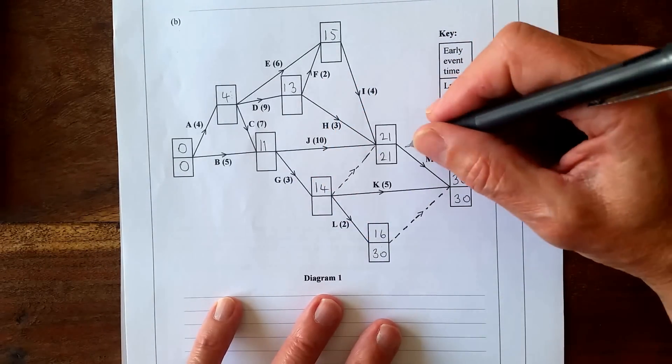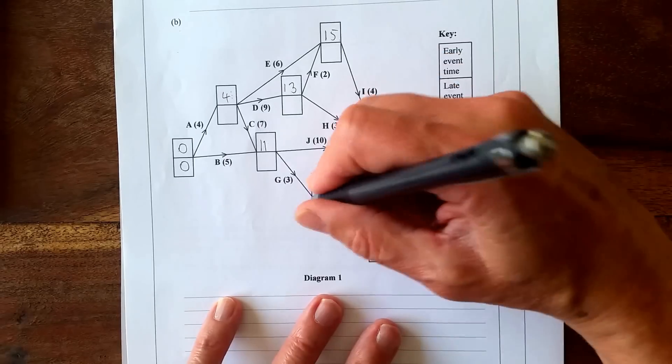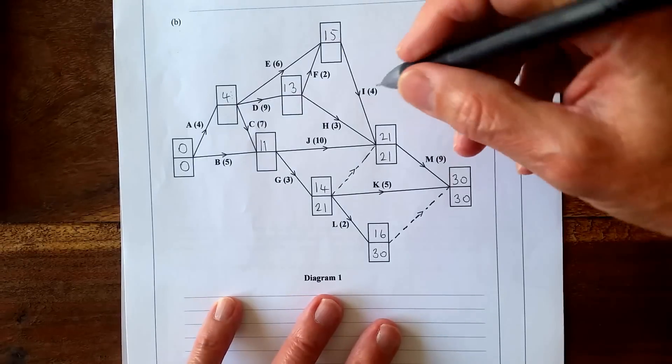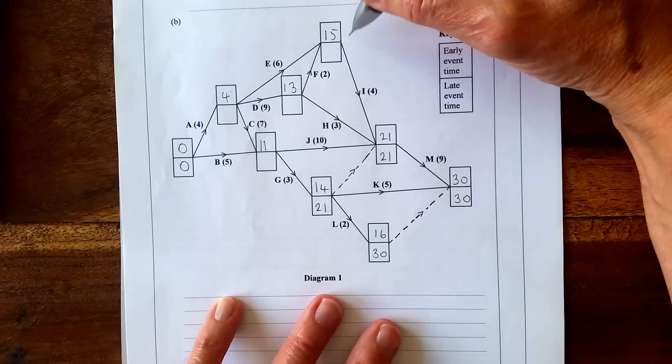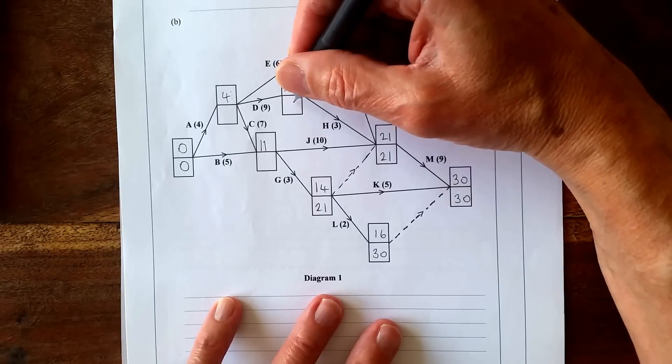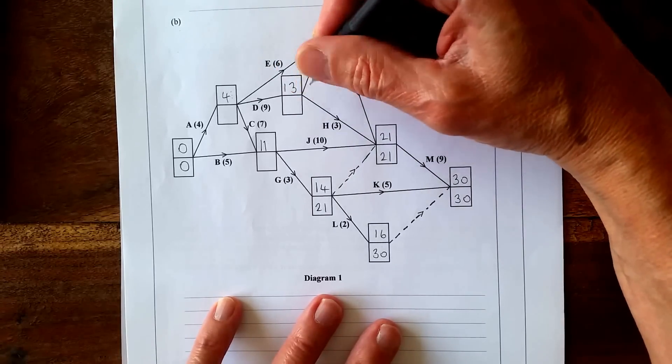And 21 take away nothing is 21, which is smaller than 25, so put 21 in. 21 take away 4 is 17. And then we've got 21 take away 3 is 18, but 17 take away 1, now let's try this one, take away 4 is 15, which is smaller.